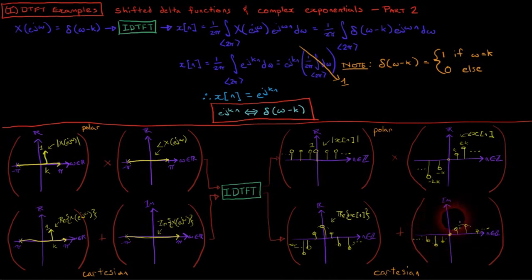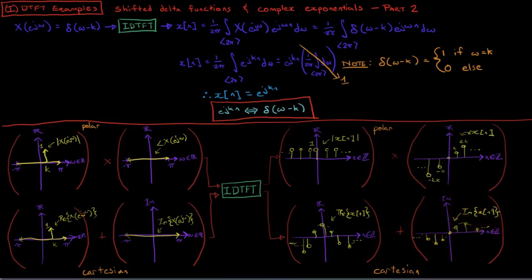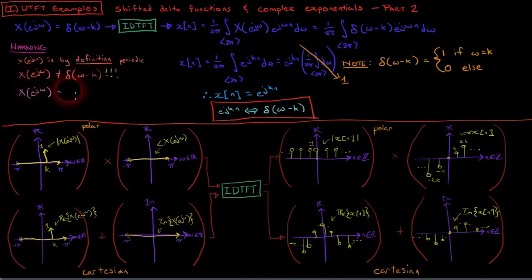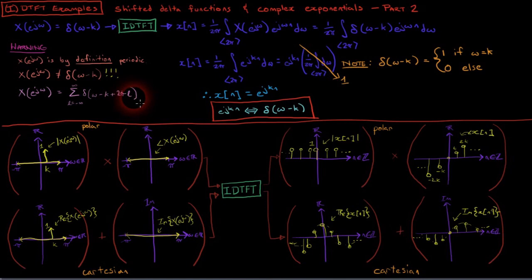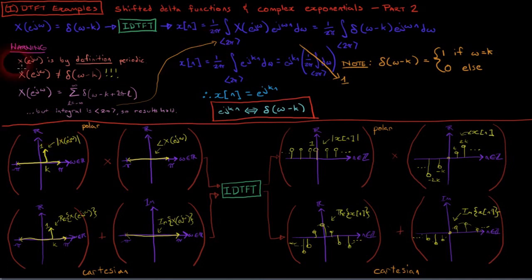I did make a sort of error in the derivation of this DTFT pair. Hopefully you caught it before I did. Remember that, by definition, capital X(e to the j omega) is periodic with period 2 pi, so it cannot be equal to a single delta function. It can, however, be equal to a delta function that repeats itself with period 2 pi. Luckily, because the inverse DTFT only integrates over a 2 pi interval, the result is the same. My error speaks to the fact that, as you become more familiar with the DTFT, you start to think in 2 pi intervals and ignore the underlying definitions, which is always a danger.